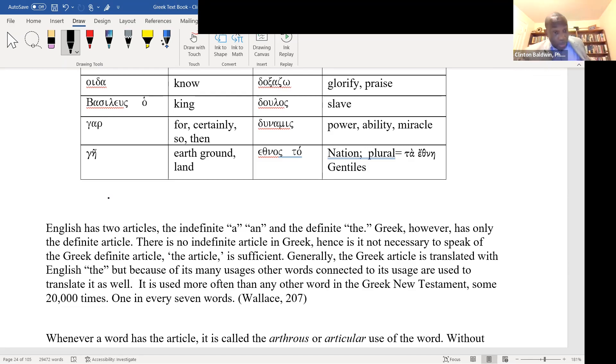It's clear, but the article is very important. Let me just go quick. Time English has two articles: the indefinite article a or an, and the definite article the. Greek, however, only has the definite article.